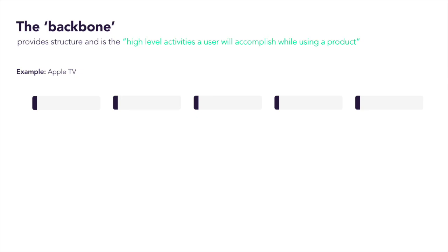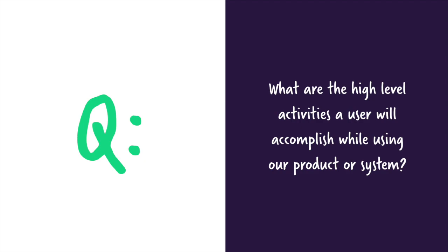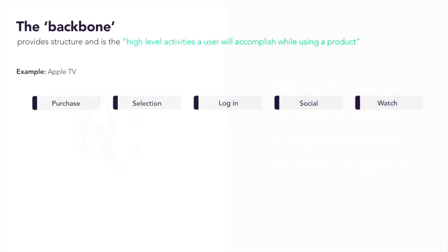The backbone sits at the top of a user story map and outlines the essential capabilities the system needs to have. Creating our backbone is step one to creating our user story map. An easy question to ask ourselves when defining our backbone is: what are the high level activities a user will accomplish while using our product or system? We'll use a simple example of buying and watching a movie on an Apple TV. Here we've defined a really simple backbone. For a user to watch a movie on the Apple TV, they would have to complete the following activities: log in, select movie, purchase movie, watch movie, and then follow-up activities such as writing a review or recommending the movie to a friend. Once we've got the activities of the backbone identified, we will order them in chronological order of how a user will interact with our product.